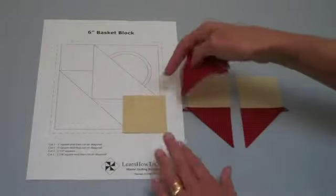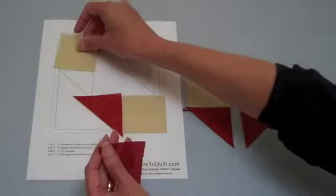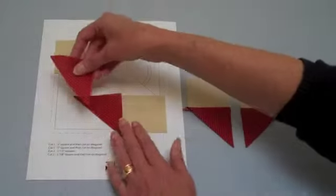we have a square right here and a triangle. And we have another square and a triangle.